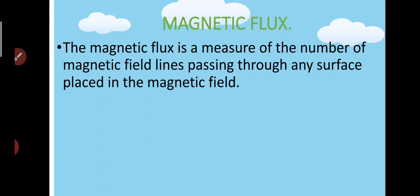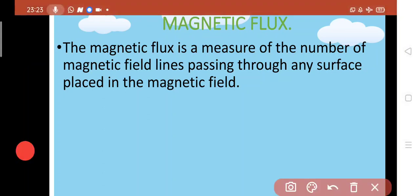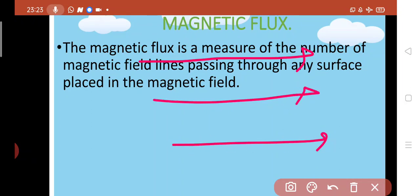If we keep a surface in a magnetic field, how many field lines will cross? That total number of field lines is known as Magnetic Flux. Here, let us suppose there is a uniform magnetic field — and it is well known that field lines are representative of the magnetic field. Now let us suppose we have placed a surface in this field. Then it is sure that a few field lines will cross through the surface — that will depend on its size. The total number of field lines crossing through the surface is known as the Magnetic Flux associated with the surface.